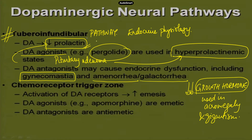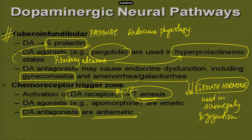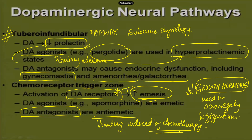Another effect of dopamine in the CNS is its activation of dopamine receptors in the chemoreceptor trigger zone. When these are stimulated, it results in emesis — similar to what we see with opiate analgesics. Clinically, we therefore have dopamine antagonists that are antiemetic, and their antiemetic property is so strong that they are actually used in vomiting induced by chemotherapy. This highlights the importance of understanding these dopaminergic neural pathways.